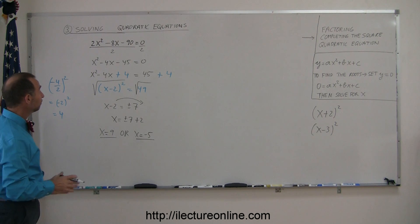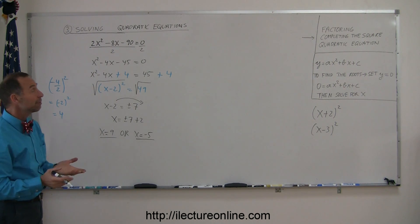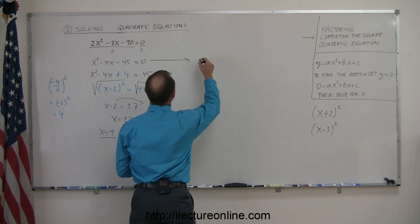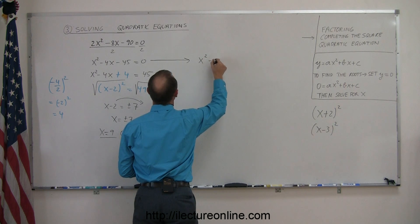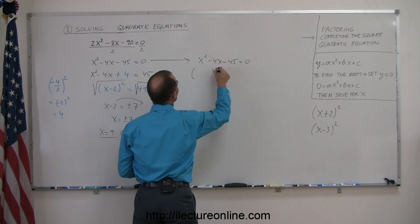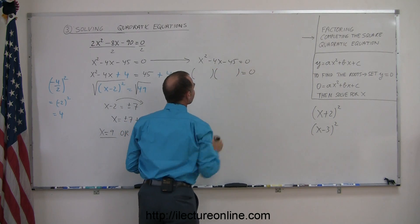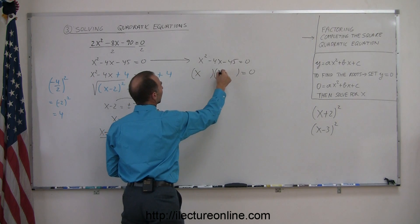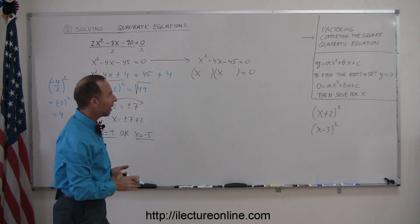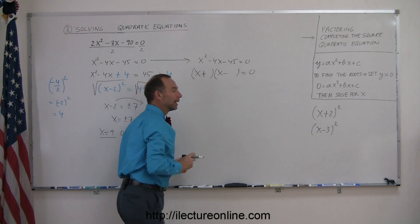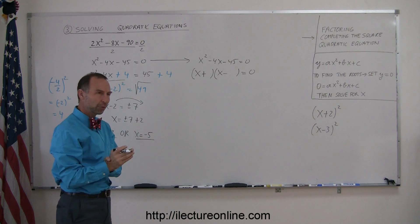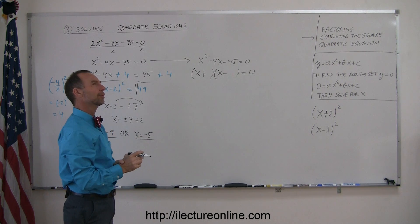Let's quickly check that using the factoring method. x squared minus 4x minus 45 equals 0. To factor this, it will look like x and x. Minus 45 can only be obtained by multiplying a positive and negative number together. The two numbers multiplied give 45, and when added give minus 4, which means the negative number is 4 bigger than the positive number.